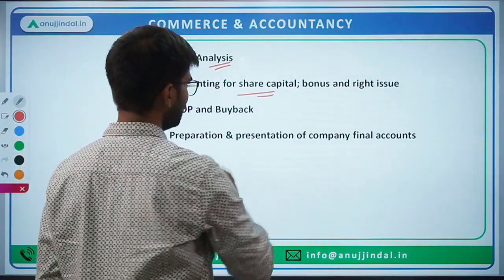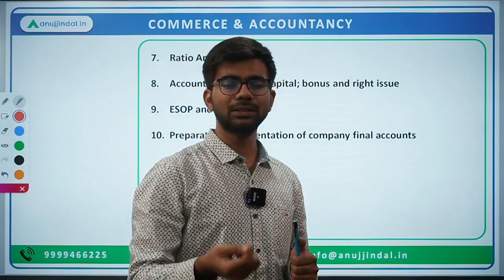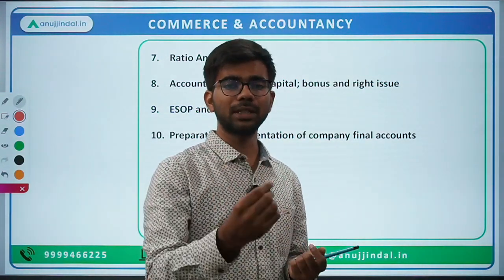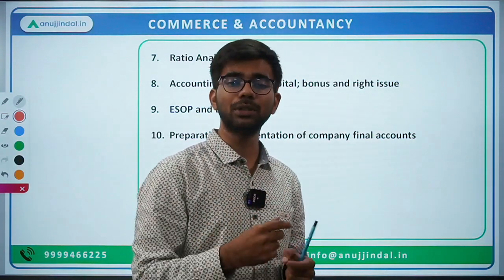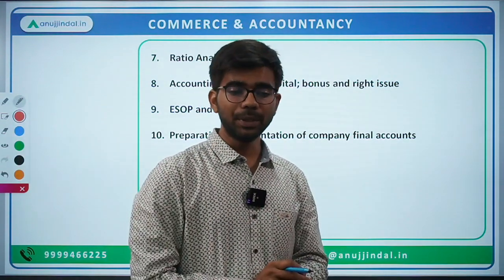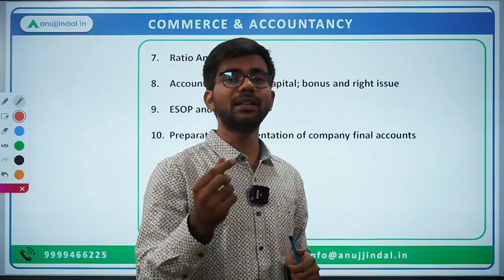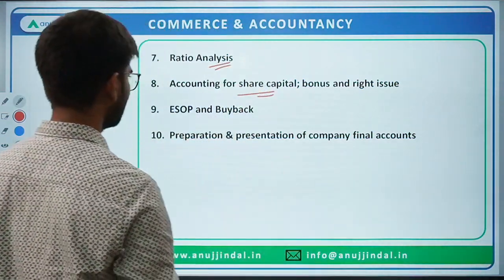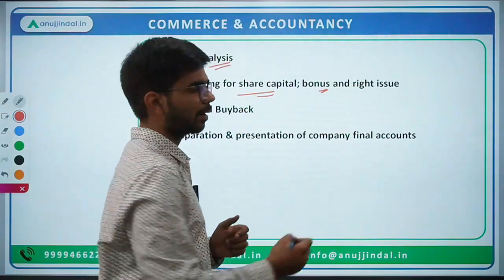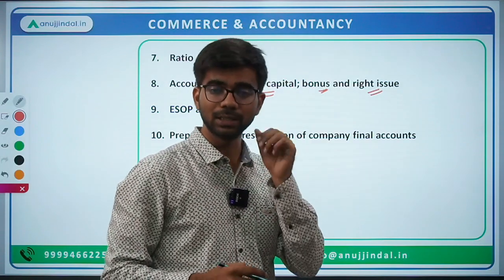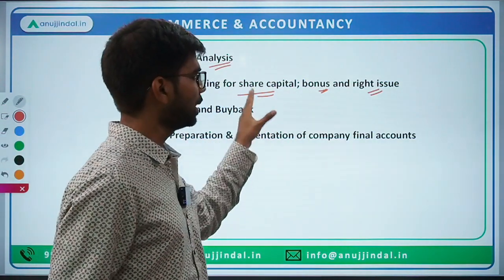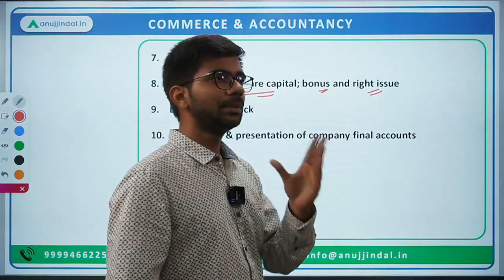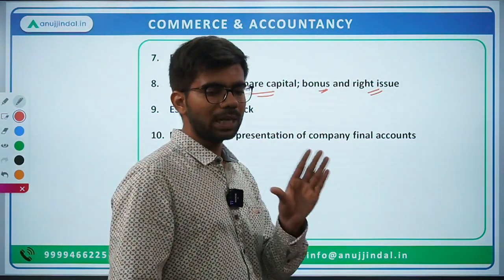Then accounting for share capital — meaning issue of share capital, issue of equity shares, issue of preference shares. What are the journal entries? Which accounts are debited and which are credited? Issue of shares at premium, at par value, or at a discount. Then preference shares — their redemption. Equity and preference shares can be forfeited, so what is the accounting treatment for forfeiture of shares? And if those forfeited shares are reissued, what is the accounting treatment? Then accounting for bonus shares issue and rights shares issue — their characteristics, conditions, and where these overlap with the Companies Act.